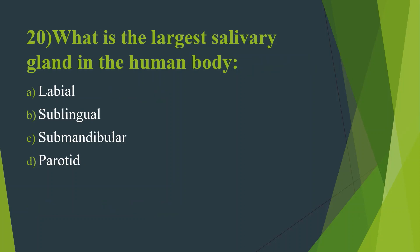Twentieth question: What is the largest salivary gland in the human body? Option A, Labial. Option B, Sublingual. Option C, Submandibular. Option D, Parotid. Answer is Option D, Parotid.